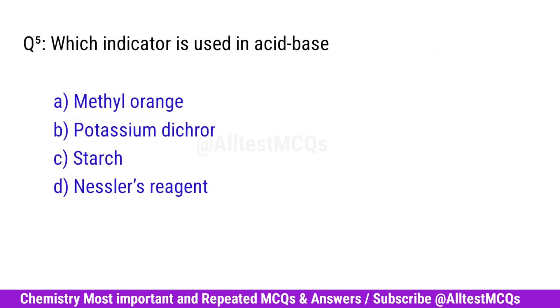Question No. 5. Which indicator is used in acid-base titration? Correct option is A. Methyl orange.